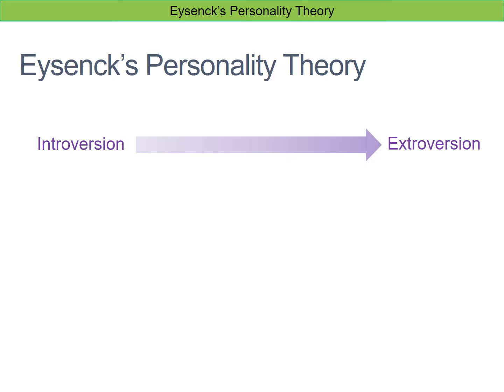The second dimension is stability at one end and neuroticism at the other. This is talking about mood and mood fluctuations. Someone who is on the stable end would have quite a stable mood and wouldn't be influenced wildly by things around them, whereas somebody on the neurotic end would have bigger fluctuations in mood and tend to be a bit more anxious.